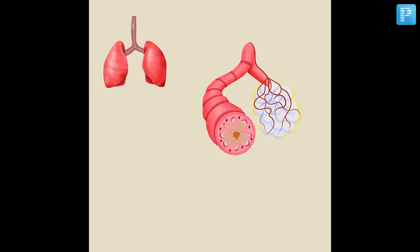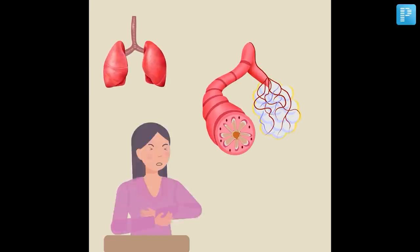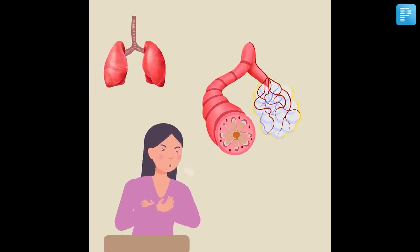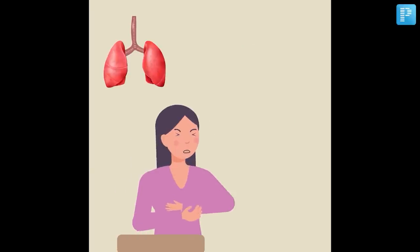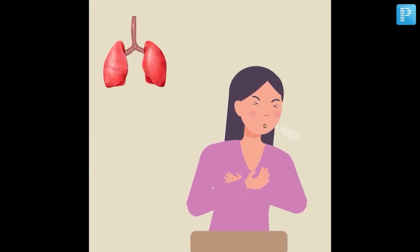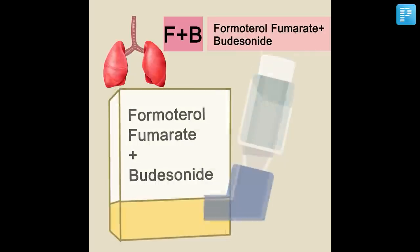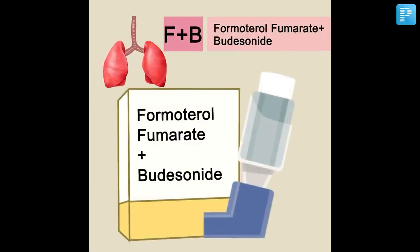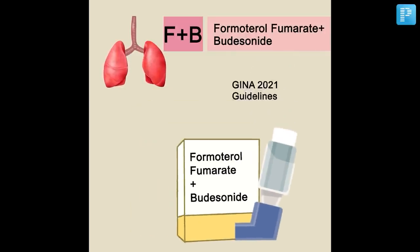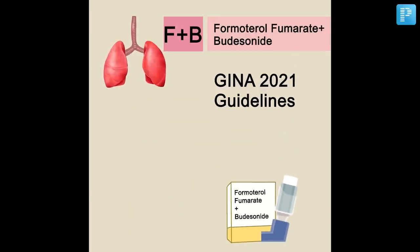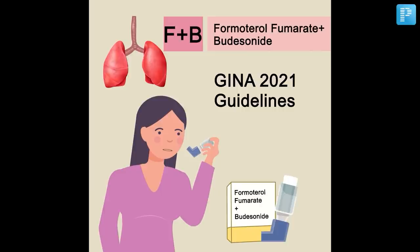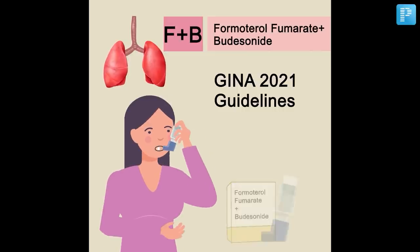The patient will be adopting a tripod position during exacerbation and will be too breathless to talk. For management, you will be giving Formoterol with Budesonide as per the GINA 2021-22 guidelines. Use of SABA alone has shown higher chances of mortality.